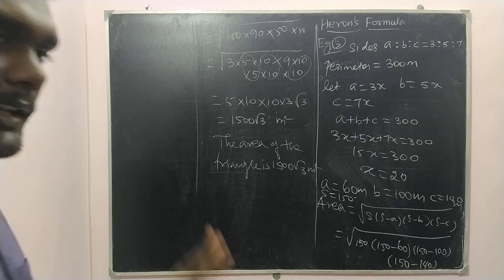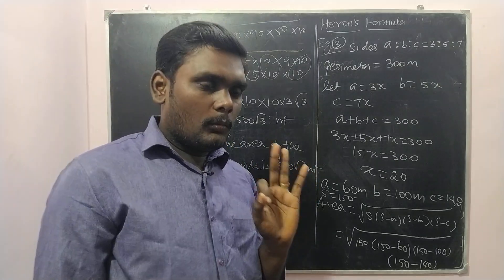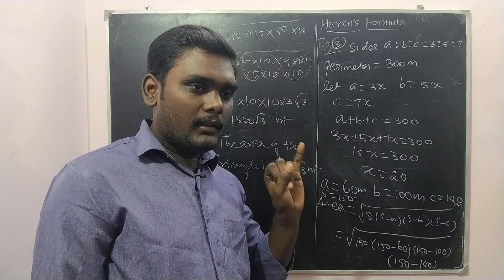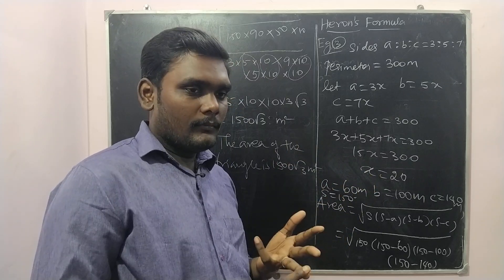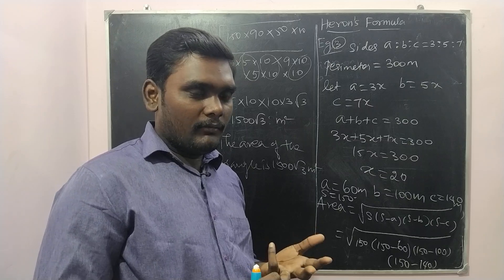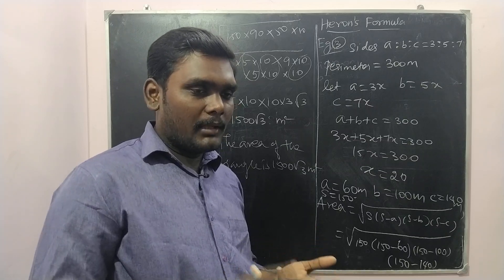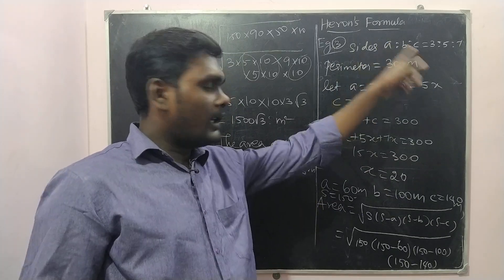So far we have seen 3 types of questions. One which directly finds when one side is hidden. Next one, application type of question, when to calculate area, when to calculate perimeter. Third one, ratio type of question.